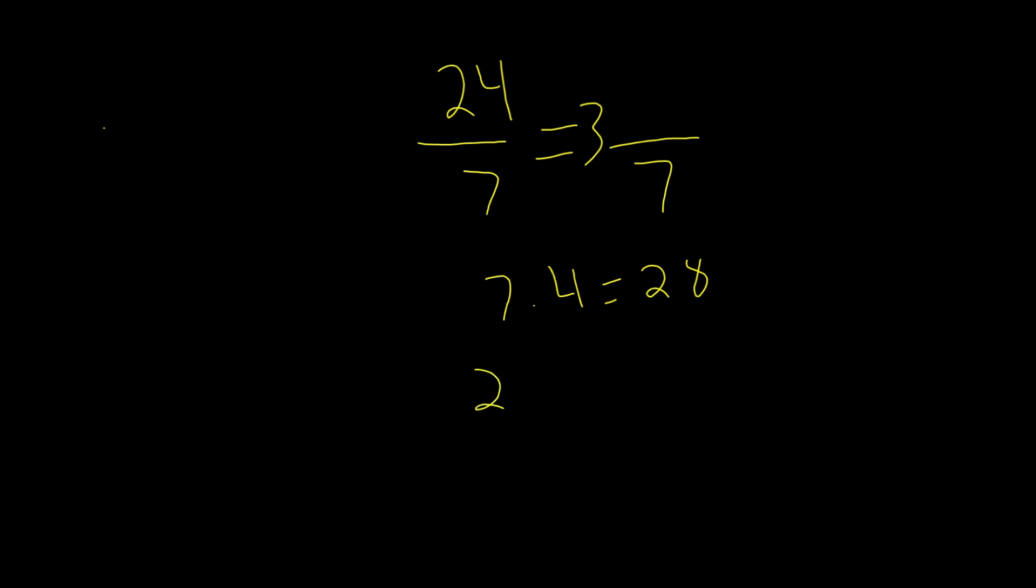3 times 7 is 21. 24 minus 21 is 3. So 3 is our new numerator. And this is our answer in mixed number form.